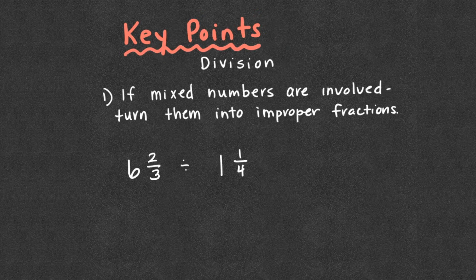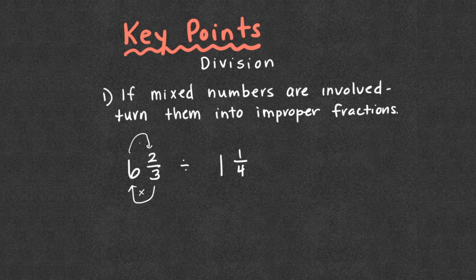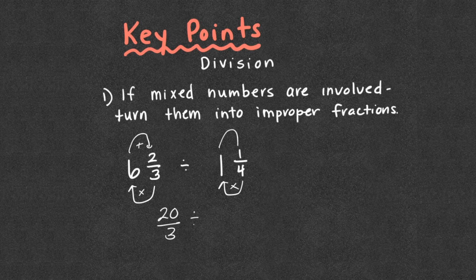Let's get into division. If we have mixed numbers involved, we're going to turn them into improper fractions — always. So three times six is 18, plus two is 20, giving us twenty-thirds. And four times one is four, plus one is five, giving us five-fourths. That would be step one when dealing with division.